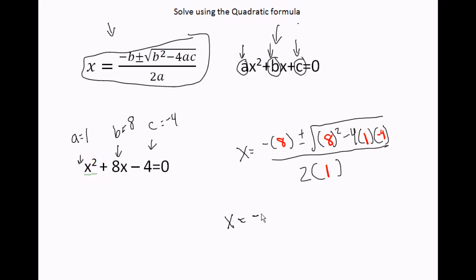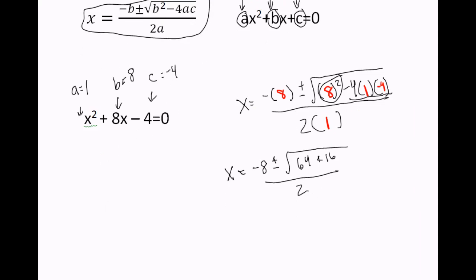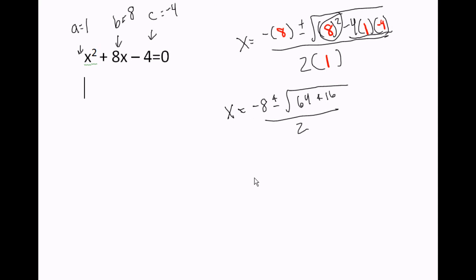x equals negative 8 plus or minus the square root of 8 squared, which is 64, minus 4 times 1 times negative 4. That means negative 4 times negative 4 gives us a positive 16, all over 2. So x equals negative 8 plus or minus the square root of 80, since 64 plus 16 is 80, over 2.